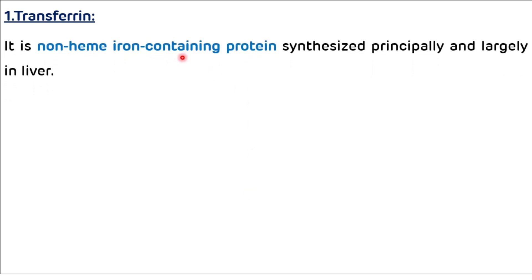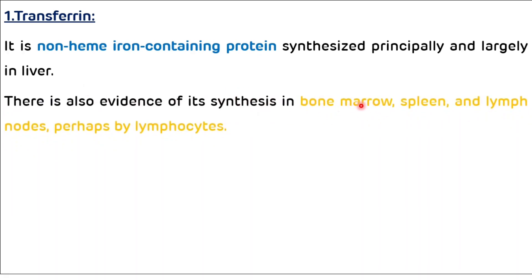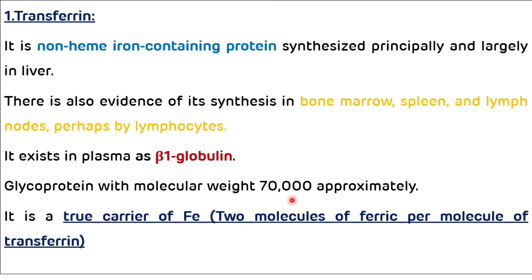Transferrin is a non-heme iron-containing protein synthesized principally in the liver, with evidence of synthesis also in the bone marrow, spleen, lymph nodes, and perhaps by lymphocytes. It exists in plasma as a beta-1 globulin. It is a glycoprotein with a molecular weight of 70,000 daltons. It is the true carrier of iron — one molecule of transferrin carries two molecules of ferric iron.